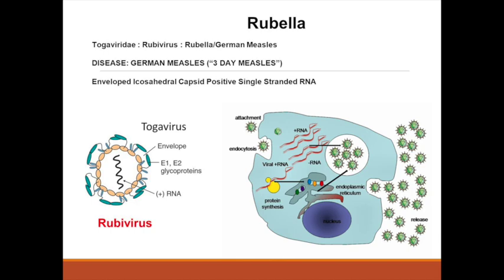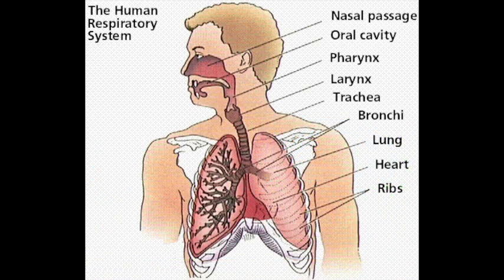The rubella virus most likely enters the cell through endocytosis. Once in the cell, the virus releases its genetic information. Replication of this virus is slow, with a latency period of 8-12 hours and peaks at about 36-48 hours after infection. The virus is transmitted via the respiratory system and replicates in the nasopharynx and lymph nodes.